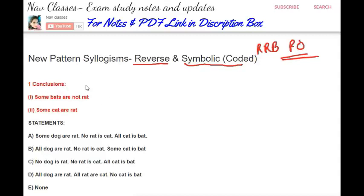Let's see question number 1. Here we have conclusions and statements — this is reverse syllogism. As per the reverse syllogism method, we are going to read the conclusion first, and then we will see whether the statements are following or not — whether these conclusions can be extracted out of these statements.